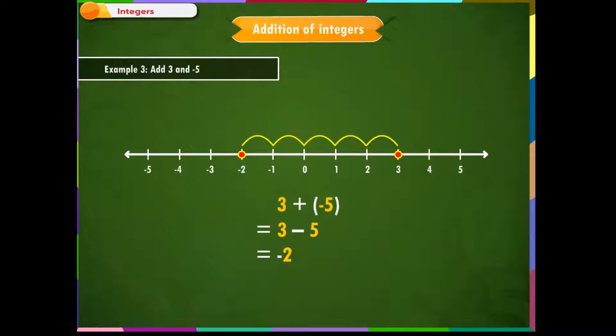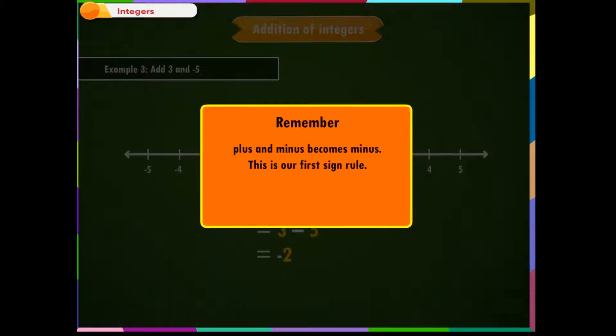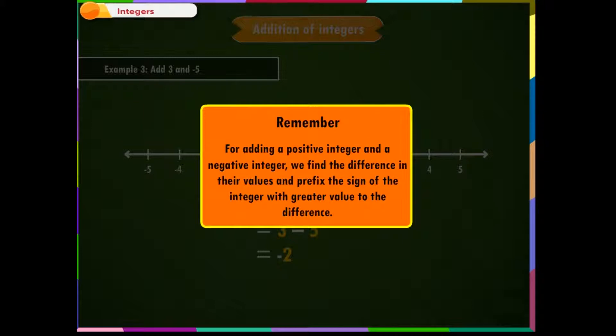Remember the important points: 1. Plus and minus becomes minus — this is our first sign rule. 2. For adding a positive integer and a negative integer, we find the difference in their values and prefix the sign of the integer with the greater value to the difference.